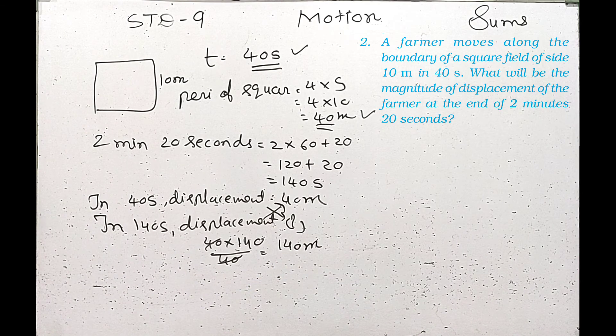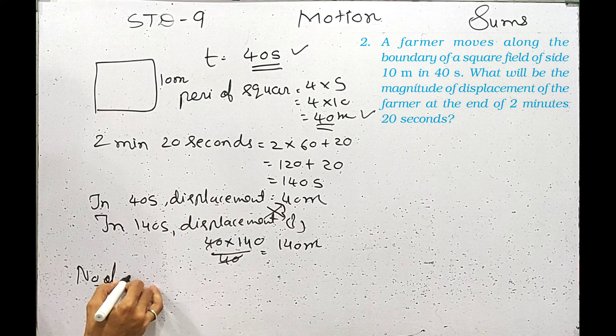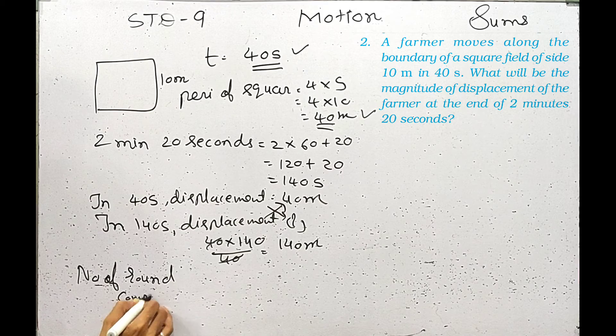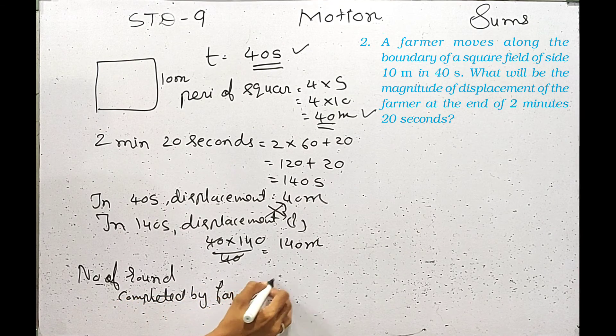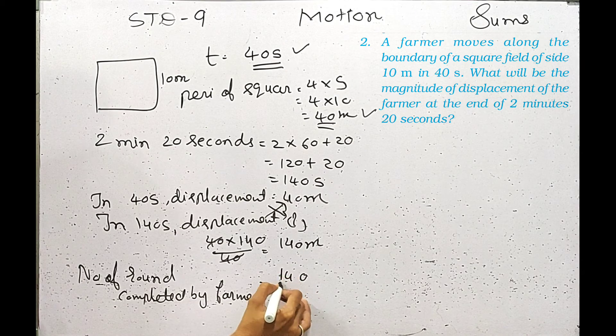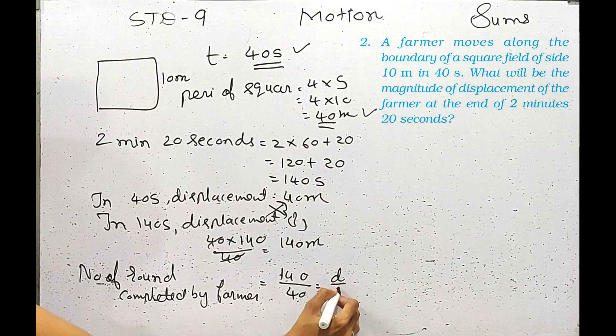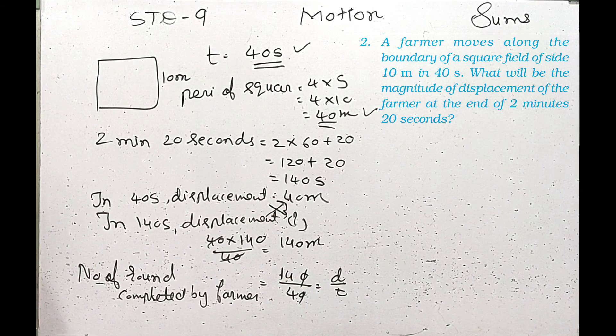If you want to see how many rounds the farmer completed, the number of rounds completed by the farmer: displacement divided by perimeter, so that is 140 divided by 40. So 3.5 rounds.